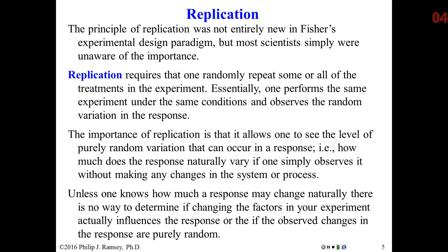Unless we know something about the fundamental noise in the system, it's very difficult to tell whether we've actually changed the response by manipulating our experimental factors, or whether we're simply observing random changes. Many published research articles where the results can't be reproduced can be traced back to the fact that the experimenters failed to replicate — they did some experimentation until they got a result they liked and published it without knowing that result was purely random.